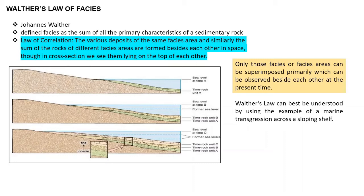Now let us look at a very important concept: Walther's Law of Facies. This question has been asked in various competitive examinations. It was given by Johannes Walther, who defined facies as the sum of all the primary characteristics of a sedimentary rock. Walther gave the law of correlation. In its original form, the law states that the various deposits of the same facies area, and similarly rocks of different facies area, are formed beside each other in space, though in cross section we see them lying on top of each other.